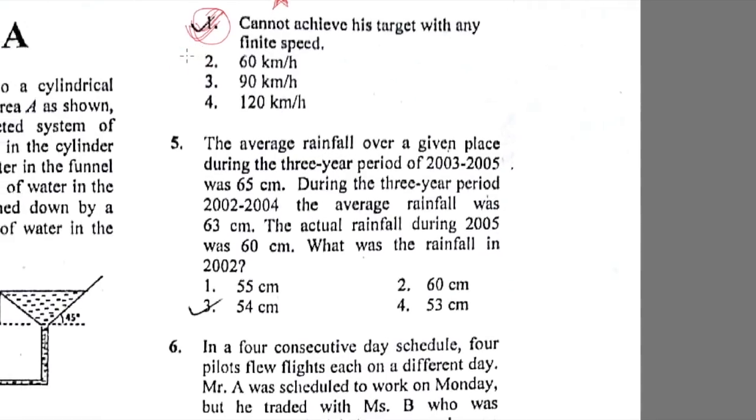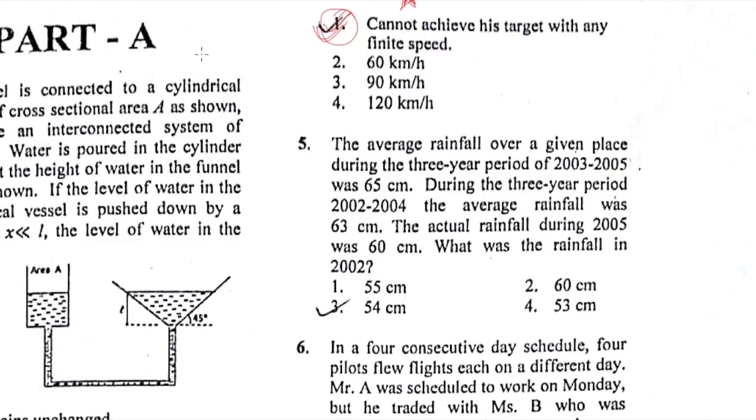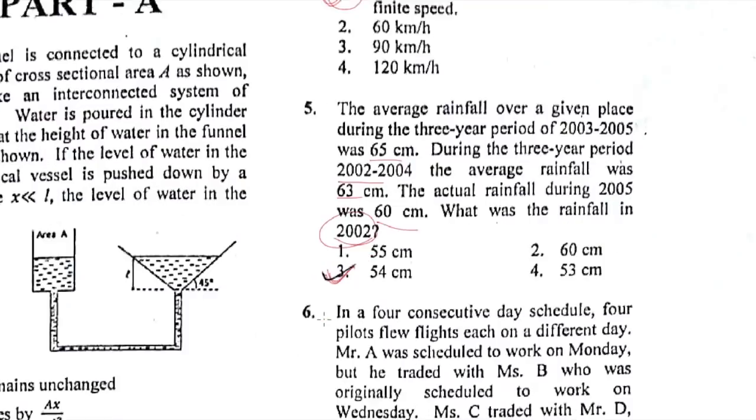This fifth one says the average rainfall over a place during 2003-2005 was 65 centimeters, and during 2002-2004 average rainfall was 63 centimeters. The actual rainfall during 2005 was 60 centimeters. They're asking the rainfall in 2002. It's an average kind of question. If you put all these values and solve it, it wasn't that difficult. The correct answer is option 3, which is 54.